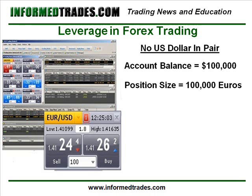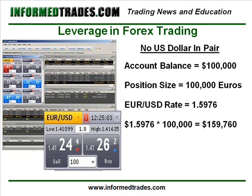As our account is in US dollars, we need to calculate how large of a position this is in US dollars to get the leverage ratio. We do this by taking the rate of the EURUSD currency pair, which again as of this lesson is trading at 1.5976, and multiply this by our position size of 100,000 euros. We then take the result of this calculation, 159,760, and divide it by our account balance of 100,000, which gives us a leverage ratio of 1.6 to 1.